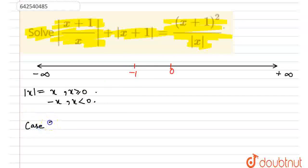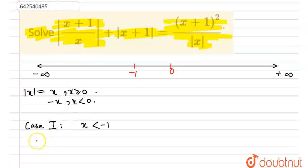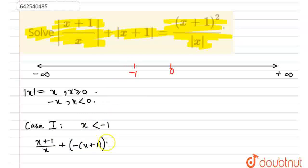Case 1: x is strictly less than minus 1. When x < -1, x+1 is negative and x is also negative, so (x+1)/x is positive, and the magnitude of a positive is just that same value. So the first term becomes (x+1)/x. Now, x+1 is negative, so magnitude of x+1 is minus(x+1). And magnitude of x is minus x since x < -1.